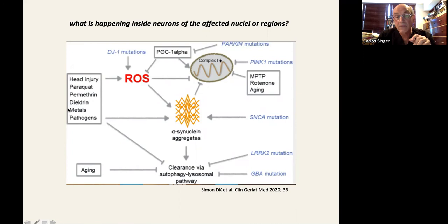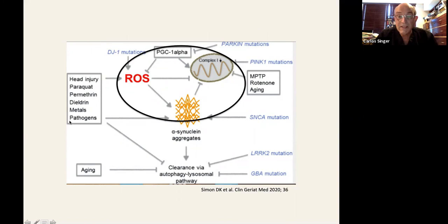You have the process of aging, always aging is always present as a risk factor for Parkinson's. And you have here, the mutations we spoke about. Up here, you have the recessive ones. And in here you have the dominant ones. And what is happening here?